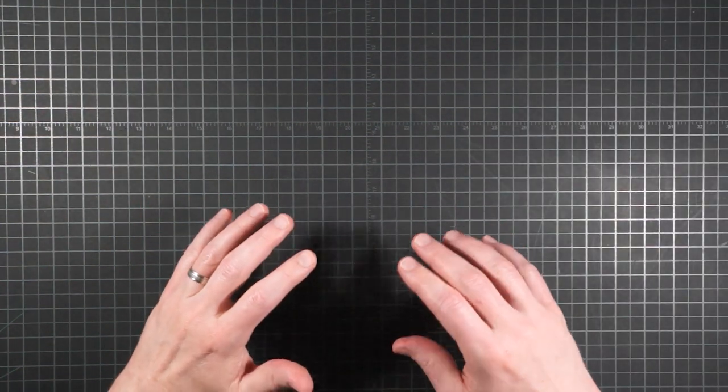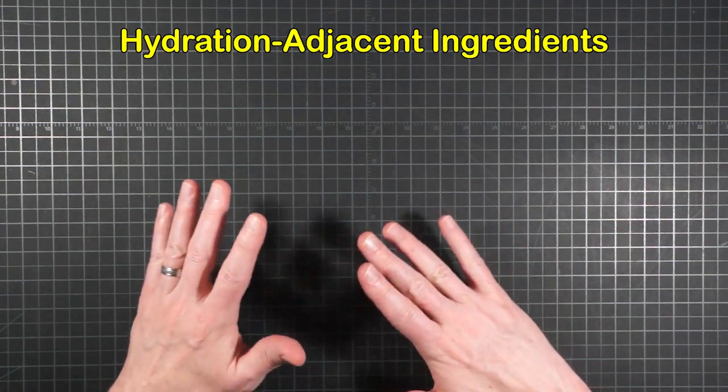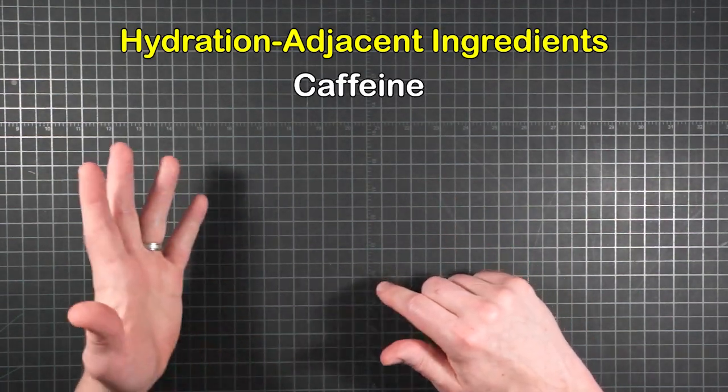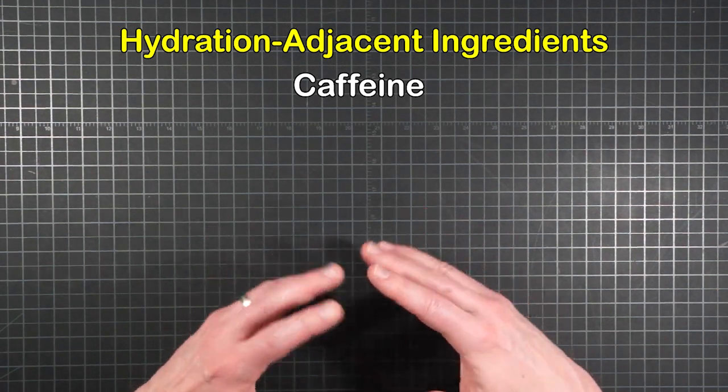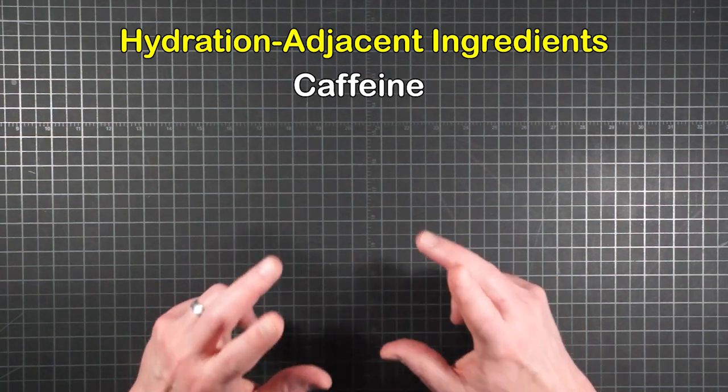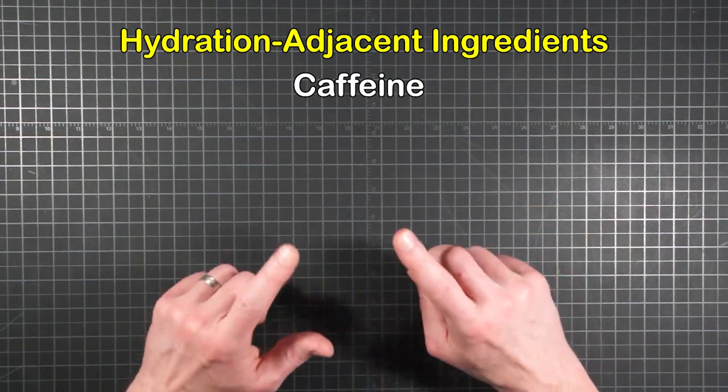Okay, there are a few other ingredient types that show up in electrolyte mixes that I sort of call hydration adjacent. Caffeine's a popular one. There's enough to say about caffeine and athletic performance to fill a separate video, but on the specific aspect of its inclusion in a hydration formula, OptiComp had this to say.